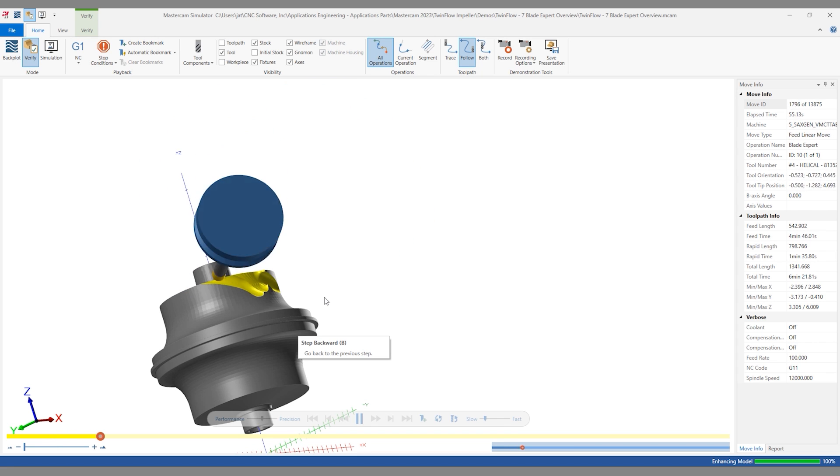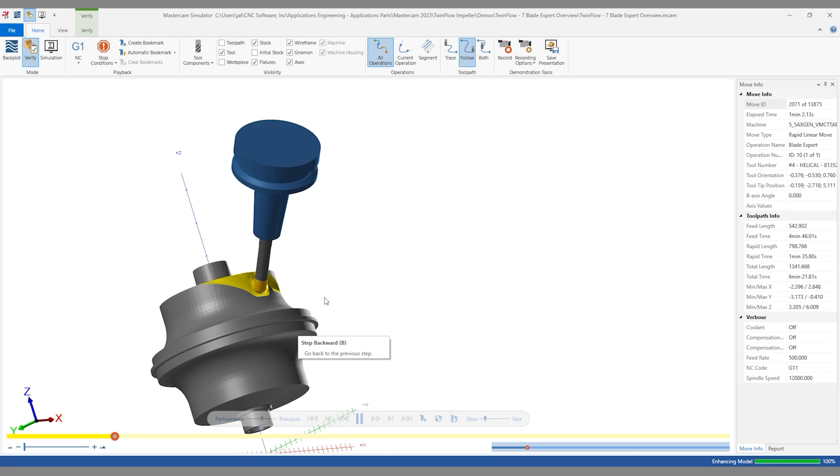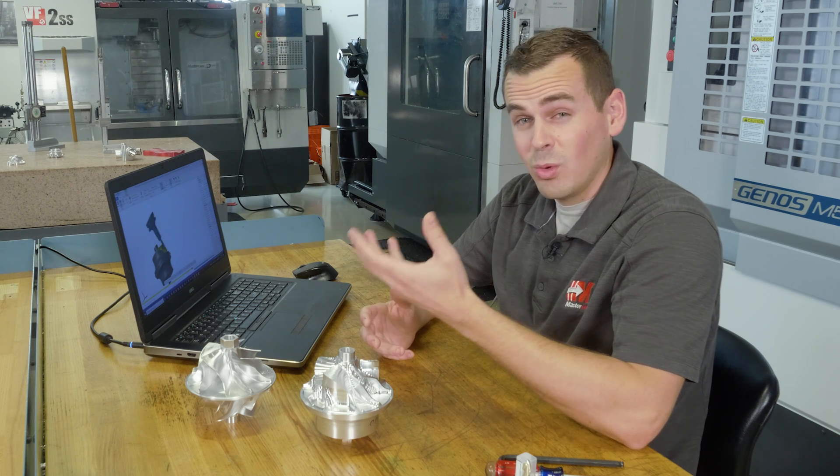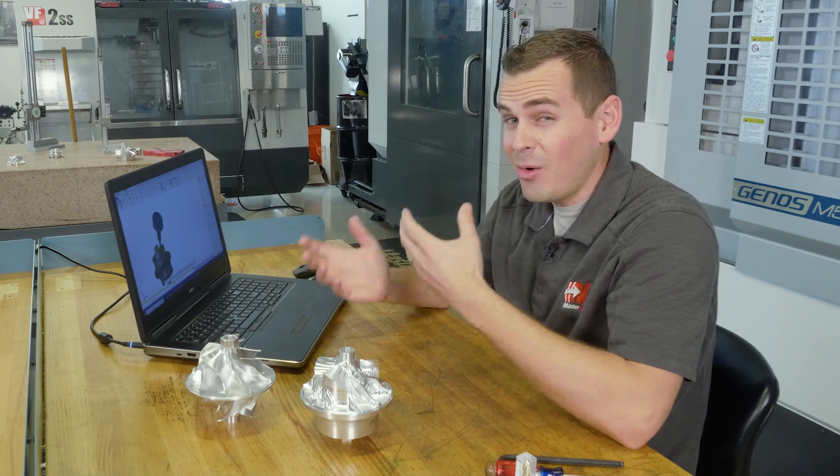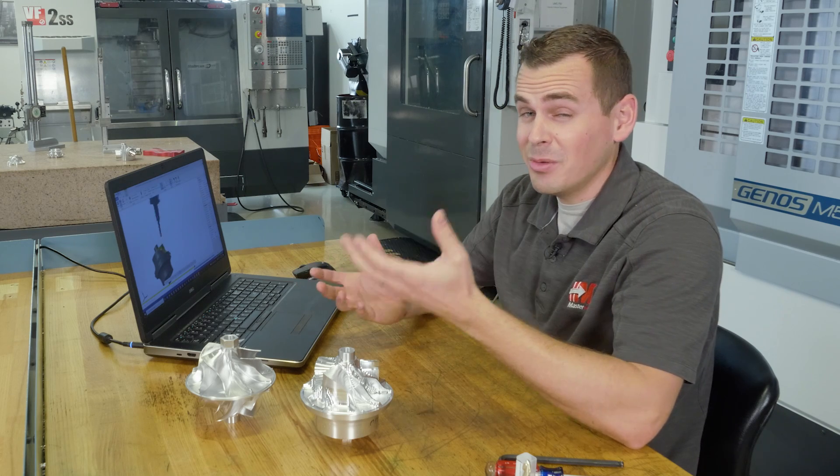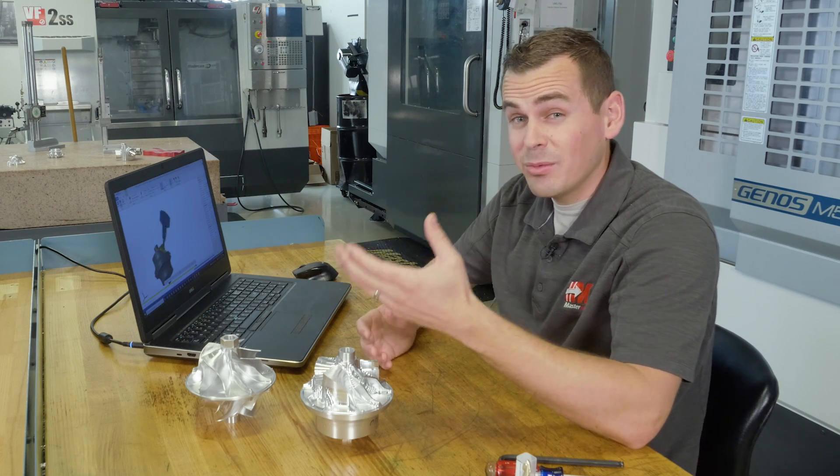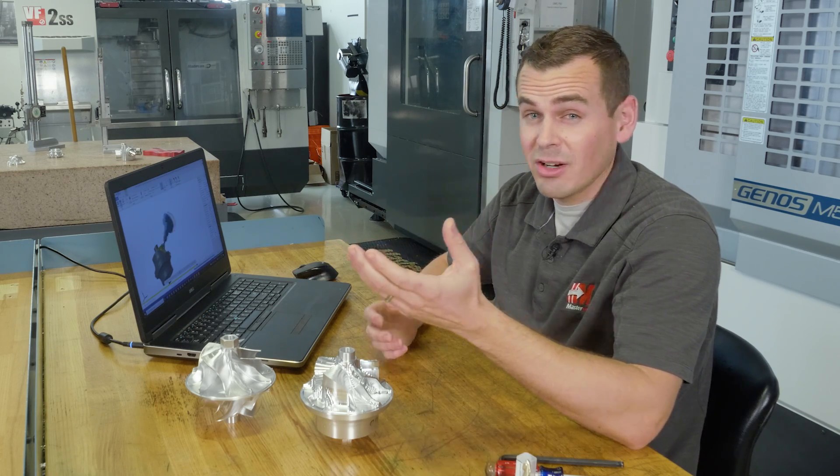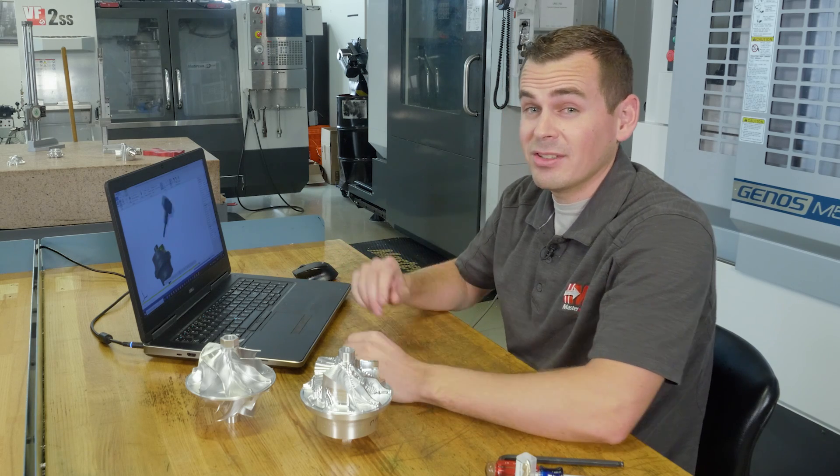We'll turn this down and run it a little slower so we can see the motion happening. So this is where we really start to see the benefits of BladeXpert. It created automatic tool axis control strategies for us without selecting geometry or doing anything extra. All we did was pick the model, tell it where the blades are, what the hub is, and let BladeXpert do the rest.